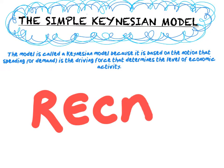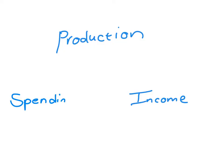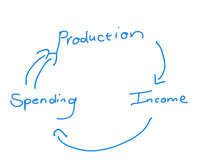So Keynes believes that spending is the driving force, but first let's recap the three major flows in the economy: production, income and spending. As we know by now, production will create income and income in turn spending. These three flows are very important for you to understand. So we can state that production will equal income will equal spending.